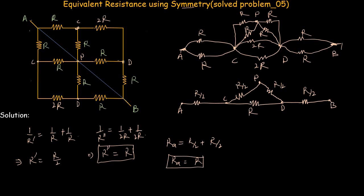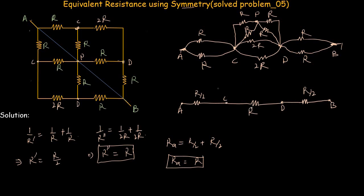Replacing those two resistors with their equivalent resistance of R, then identifying that the remaining two resistors are in parallel giving R/2, we see that the three remaining resistors are connected in series. So the equivalent resistance between point A and B is R_AB = R/2 + R/2 + R/2 = 3R/2.